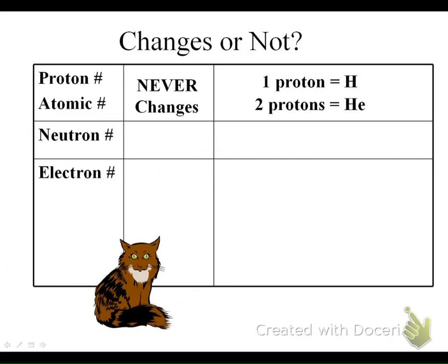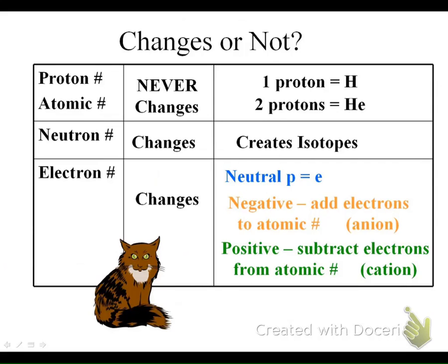Our proton number never changes — it's always equal to our atomic number. If I have one proton, I have hydrogen; if I have two protons, I have helium. Our neutron number can change, creating isotopes. Our electron number can also change; when the electron number changes, we have an ion. Please do not confuse isotopes and ions. Ions are charged atoms: a neutral atom has protons equal to electrons. A negative atom has extra electrons — that's an anion. A positive ion has lost electrons — that's a cation.